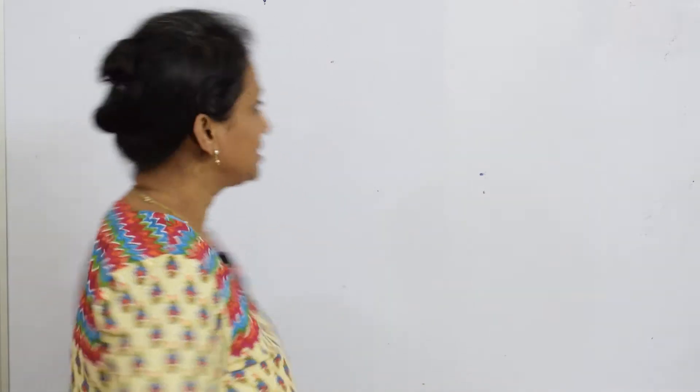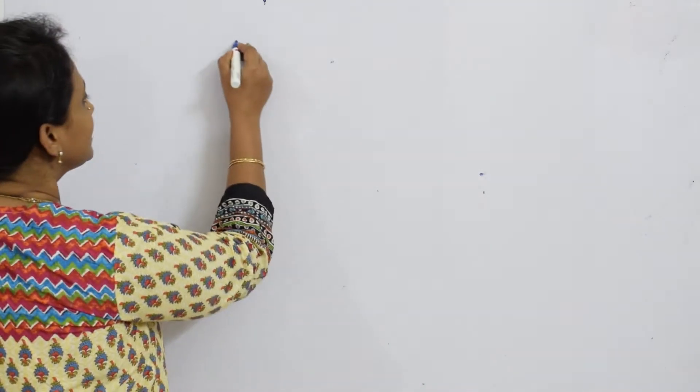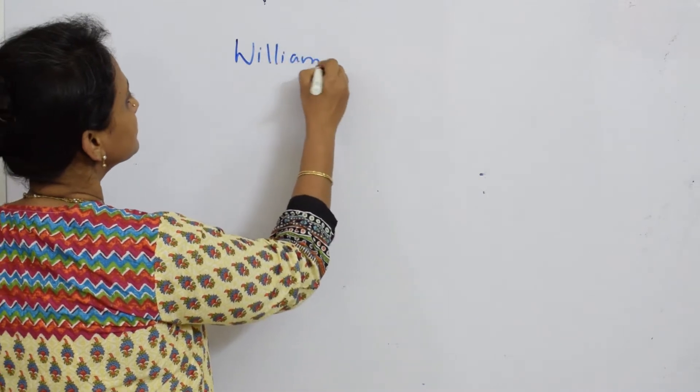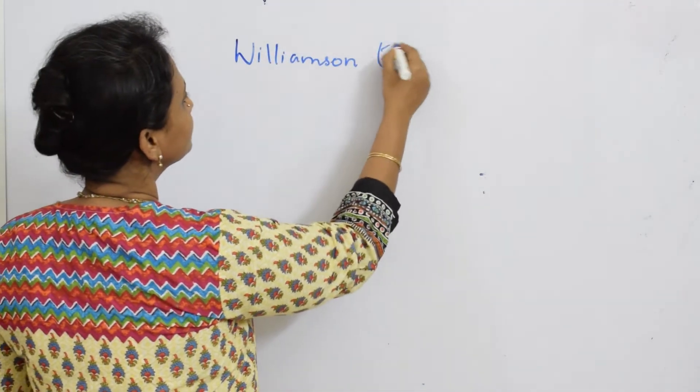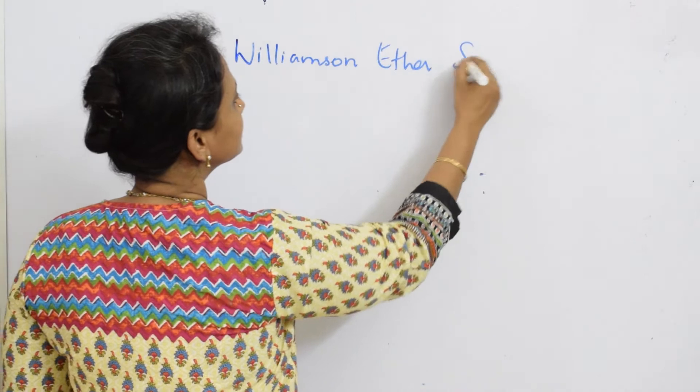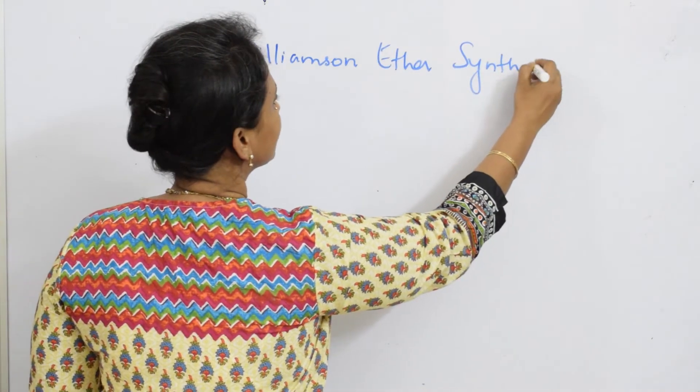Students, we've already learned the acid-catalyzed dehydration of alcohols and prepared ethers. Now, the next important name reaction in ethers is Williamson Ether Synthesis. Let us write the heading: Williamson Ether Synthesis.